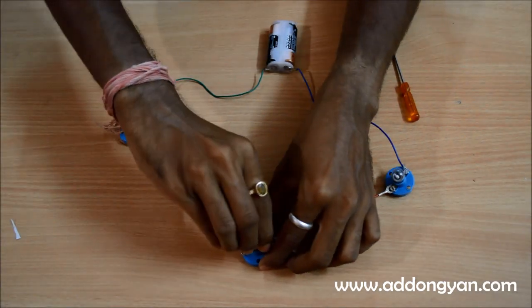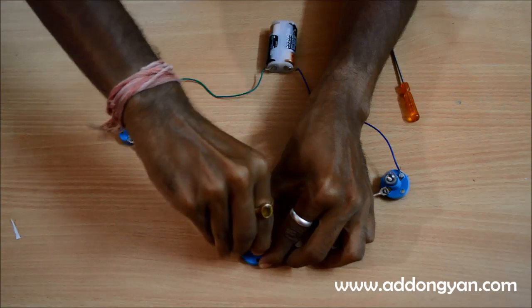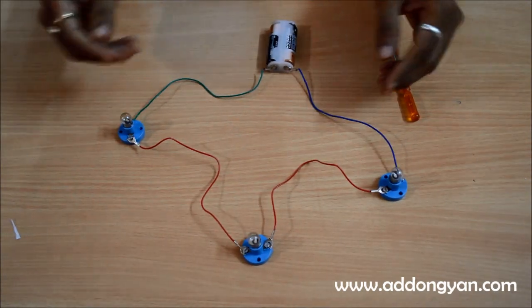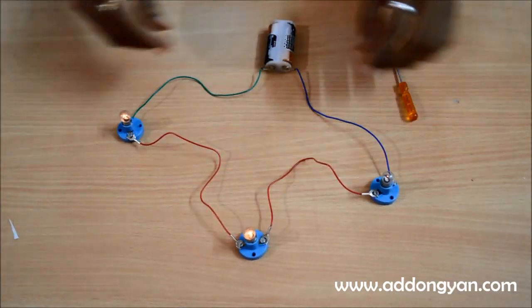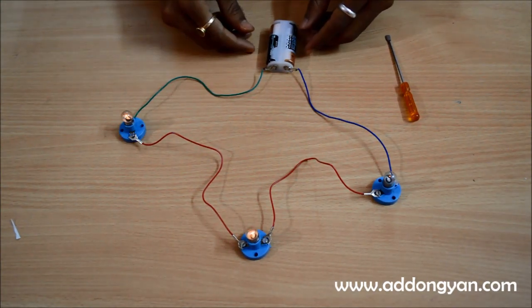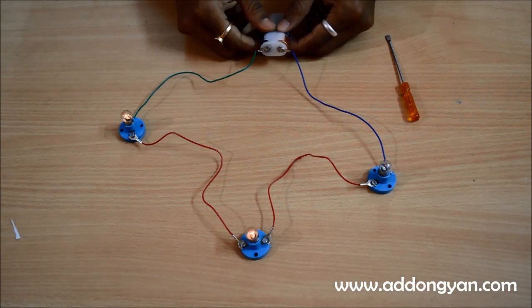So this is one of the properties of a series bulb which is why, as you can see, I can connect it back again and it's functional. And so this is why series circuit is not used in homes. Can you tell me why? Think about it. Thank you.